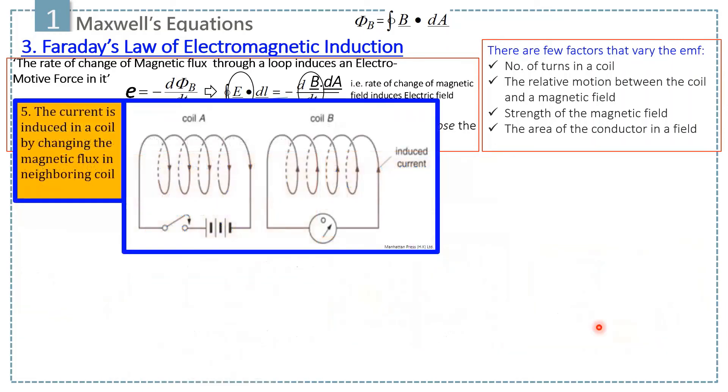In the fifth case, consider two coils, A and B. If we close the switch of coil A, current is induced in coil B. The current comes down to zero when the switch is open. Due to change in current, magnetic flux linked with coil A changes and this changing flux induces current in coil B.